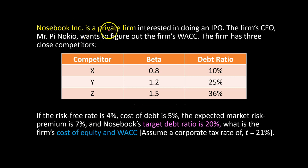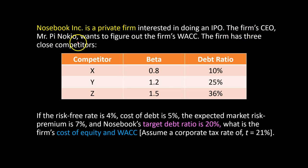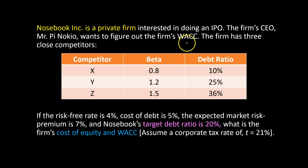Suppose Nosebook is a private firm interested in doing an IPO, and the firm's CEO, Mr. Pinocchio — what are the odds that a firm called Nosebook has a CEO called Mr. Pinocchio? — wants to figure out the firm's weighted average cost of capital.